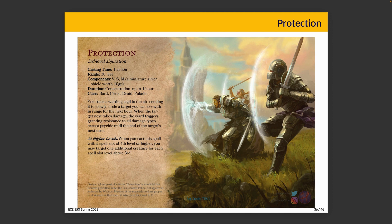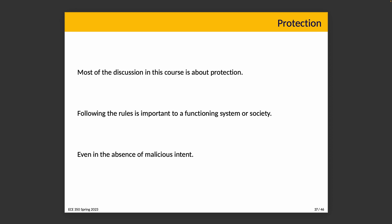Protection is a third-level abjuration spell with a casting time of one action — but no, that's not the kind of protection we're actually going to talk about. Most of the discussion in this course is really based around how the design of the operating system ensures that the rules are followed. Following the rules is important to have an actually functioning system, and without it, anarchy results.